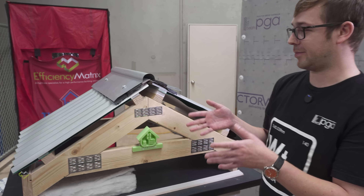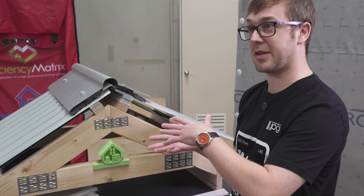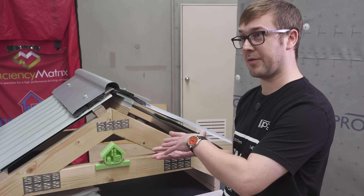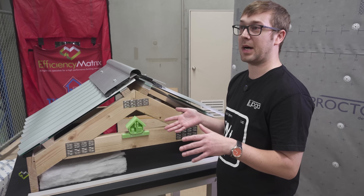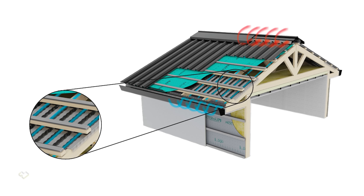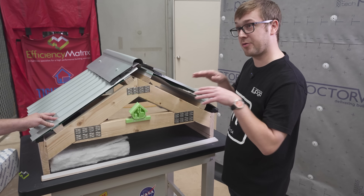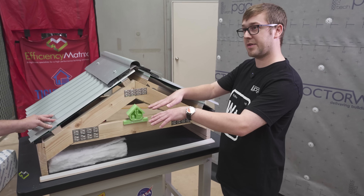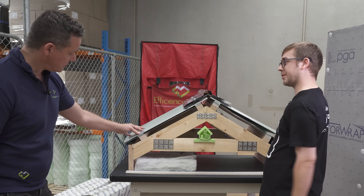What you might need is some kind of void former that just prevents that gap from closing off. We do have an eaves baffle, which is a corrugated sheet that you can stretch over the rafters. That just ensures that even when the insulation is pushed right into the eaves, you will still get airflow over it and into the roof space.